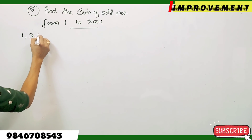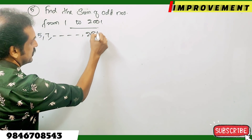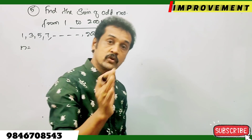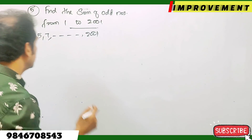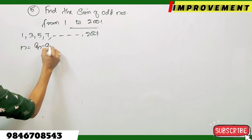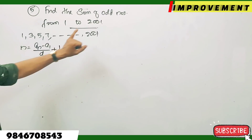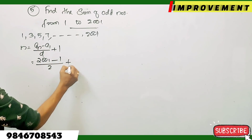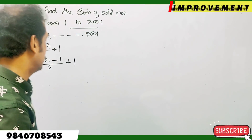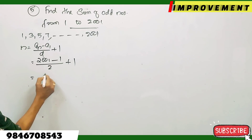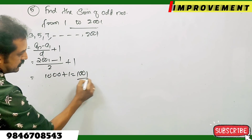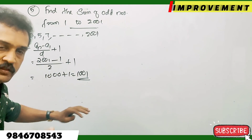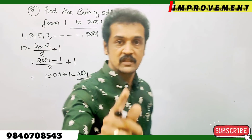How many numbers are there? The sequence is 1, 3, 5, 7 up to 2001. Using the formula: n equals (an minus a1) divided by d plus 1. That is (2001 minus 1) divided by (3 minus 1) plus 1, which equals 2000 divided by 2 plus 1, equals 1001. So the count of odd numbers from 1 to 2001 is 1001.